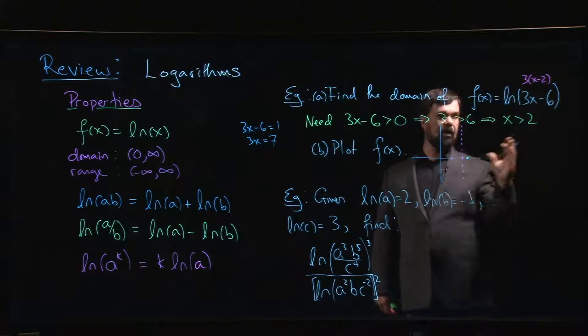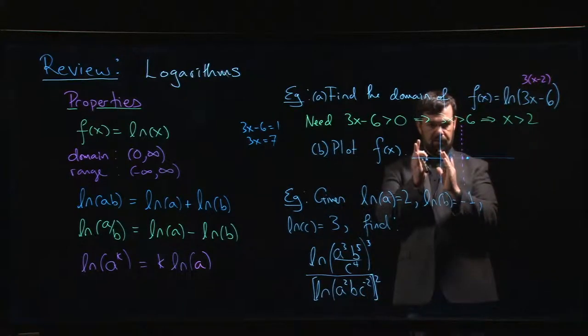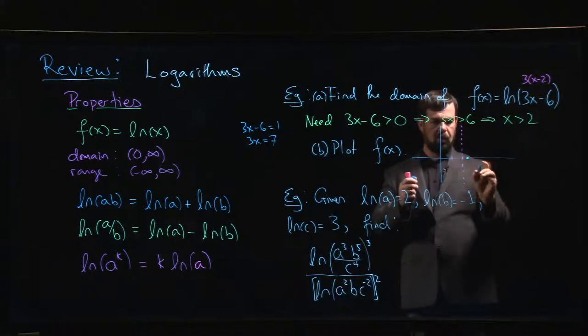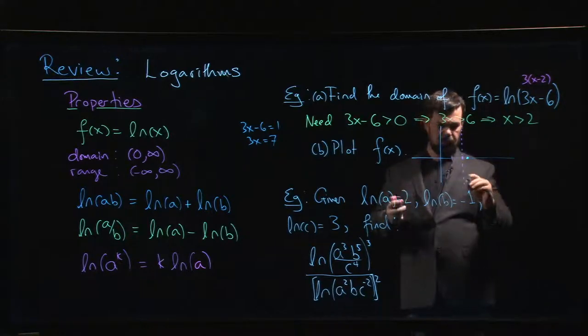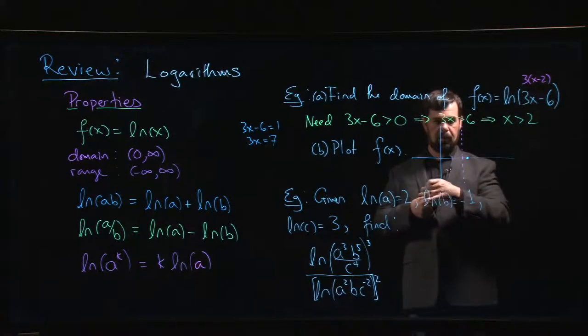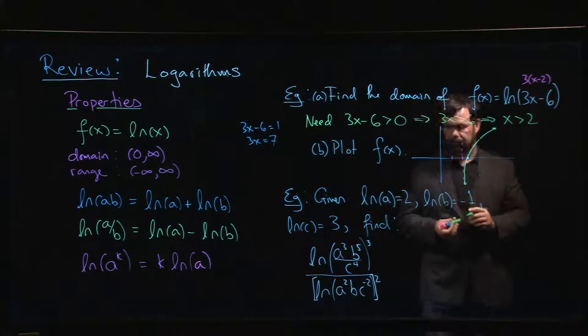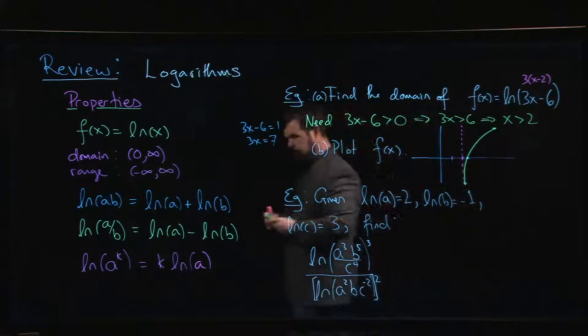So you can see it's compressed by a factor of 3. Rather than the intercept being one unit over from the asymptote, it's only a distance of one-third from the asymptote. And then we can plot it in, so we're going to have something that looks like that.